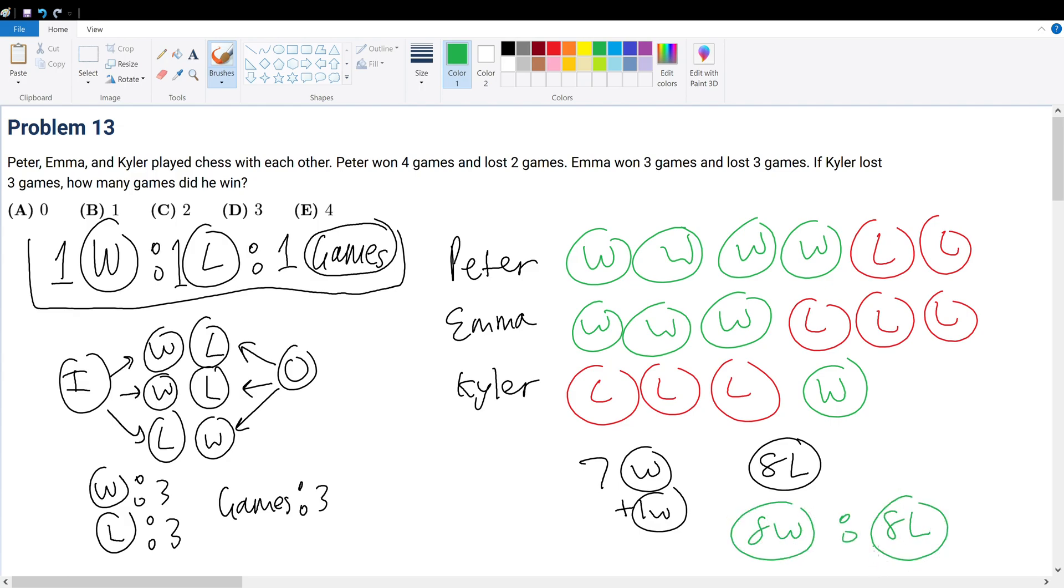Now, does that make sense? Well, yeah, because we have an 8-to-8. That's a 1-to-1 correspondence. And that must mean, in total, we have 8 games played. So, 8 games played.